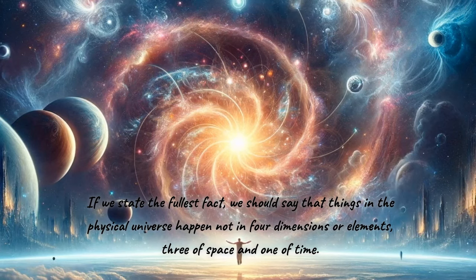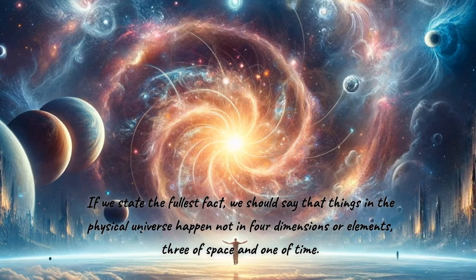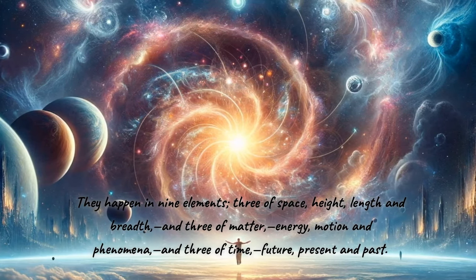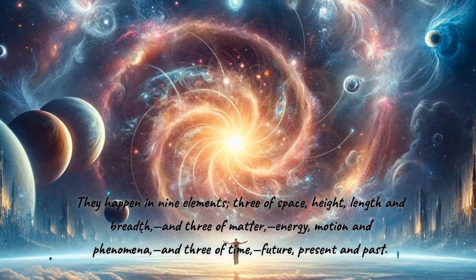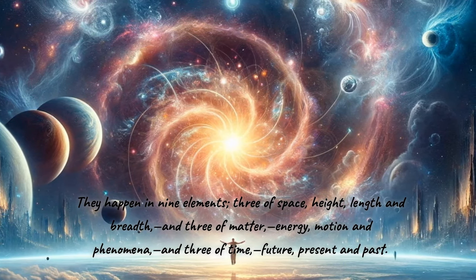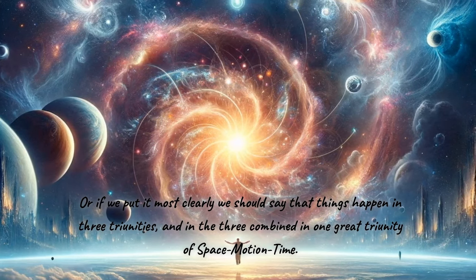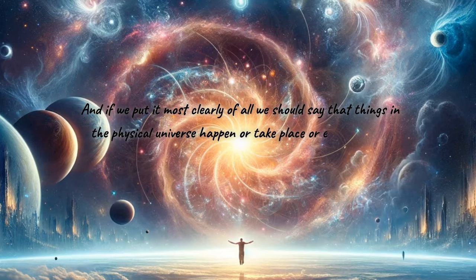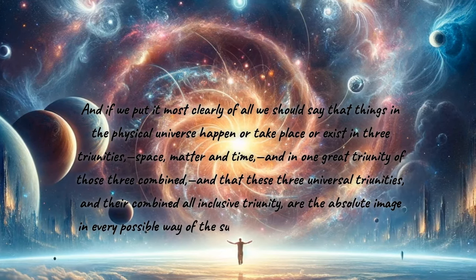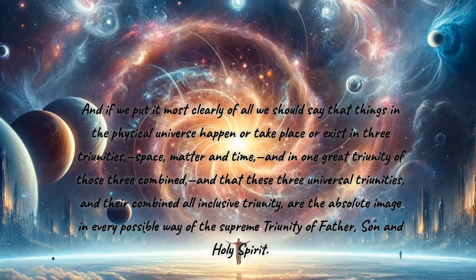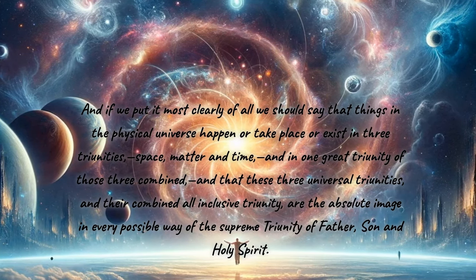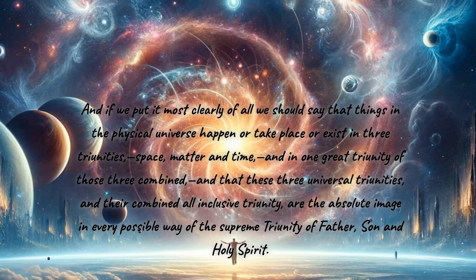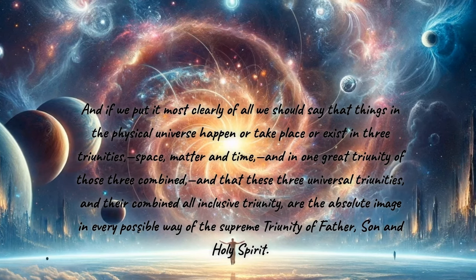Things happen in space and motion and time — any lesser statement ignores the modern universe of motion. The fullest fact is that things in the physical universe happen not in four elements but in nine: three of space (height, length, breadth), three of matter (energy, motion, phenomena), and three of time (future, present, past). These are three triunities combined in one great triunity — the absolute image of the supreme triunity of Father, Son, and Holy Spirit.